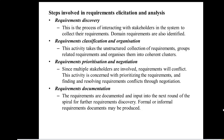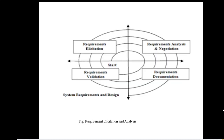In documentation, two types of documents are created: formal documents and informal documents. Formal documents contain formal information and informal documents contain informal information. This is shown in the spiral diagram for requirement elicitation and analysis, where we repeatedly perform the four steps in order to discover requirements.